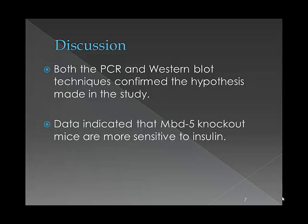Moreover, the enhanced glycolysis found in the liver confirms the elevated insulin sensitivity in the mutant mice. Similar phenotypes observed in the knockout mice also showed persistent hyperglycemia, enhanced glucose intolerance, and elevated insulin sensitivity. The data indicates that MBD-5 knockout mice are more sensitive to insulin because hepatic glucose production is under the direct hepatic control of insulin action. Consistent with insulin hypersensitivity, the knockout mice displayed significant liver glycolysis.